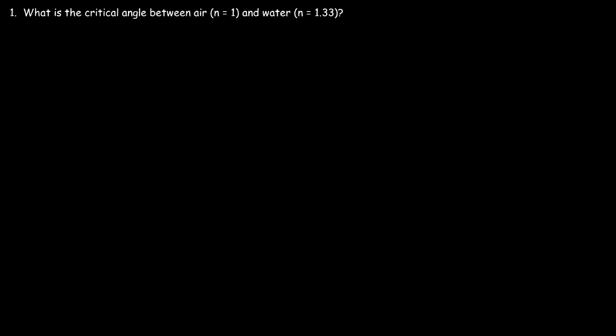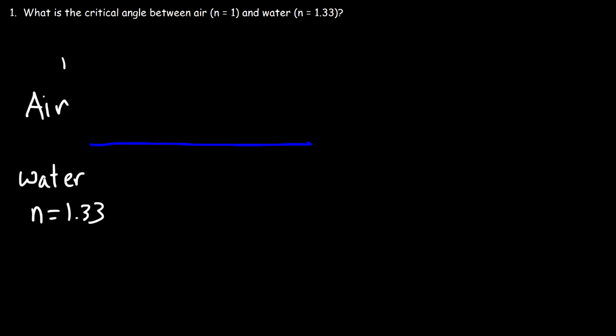In this lesson we're going to focus on total internal reflection. We have a question that asks what is the critical angle between air and water. Let's draw a picture first — that's the air-water interface, with air on top and water on the bottom. In order for total internal reflection to occur, the light ray has to travel from a material with a high index of refraction to a material with a low index of refraction. In this example, it has to go from water to air. So let's say a light ray strikes this boundary.